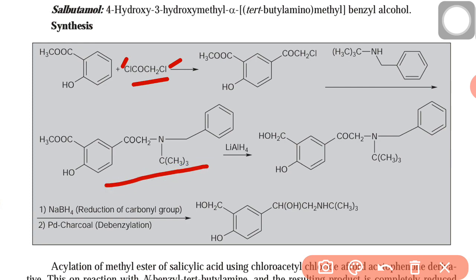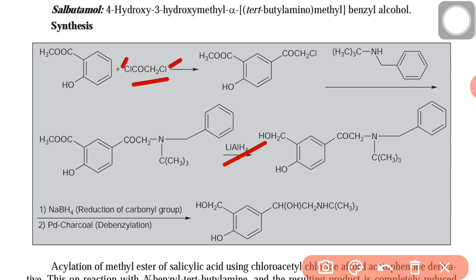This is N, and this is benzyl — C6H5CH2 — and this is tertiary butyl. Now reduction is performed with lithium aluminum hydride, which reduces the phenone part, or the ketone and ester part. The ester part is reduced to give alcohol.